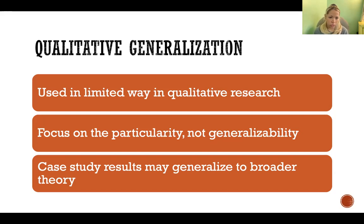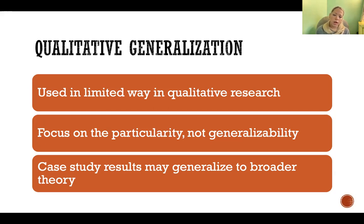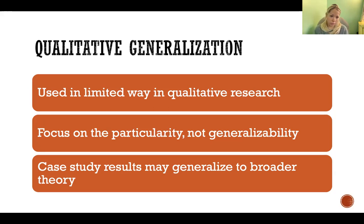We can't generalize qualitative results to a broader population because we can't be sure the participants are representative of that broader population. However, qualitative research may be generalizable to broader theory — meaning the results might support an existing theory or lead to developing a new theory. But that is different from saying the results are generalizable to a population.